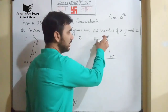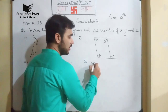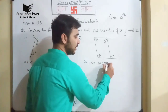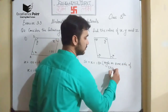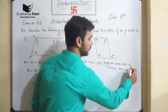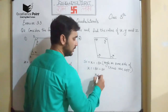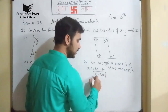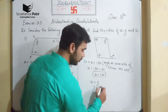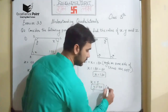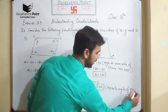Similarly for the second diagram: 50 plus X should be equal to 180 degrees — angles on the same side of a transversal are supplementary. So X is equal to 180 minus 50, which is 130 degrees. Now X should be equal to Y because opposite angles of a parallelogram are equal, so Y is also equal to 130 degrees.